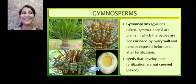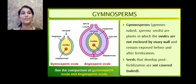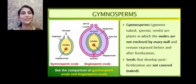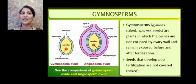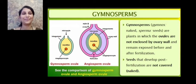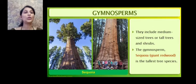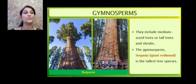Seeds that develop post-fertilization are not covered — that means they are naked. This is the gymnosperm ovule which is not enclosed by an ovary wall, whereas here we can see an ovule which is properly enclosed within the ovary. After fertilization the ovule develops into a seed, and the seed is naked, which is why they are called naked seeds. They include medium-sized trees to very tall trees and shrubs.